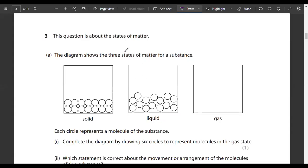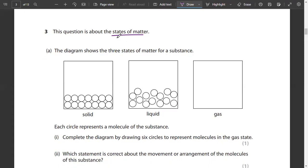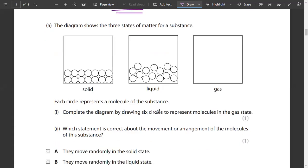Moving on to question number three. This question is about states of matter. The diagram shows the three states of matter for a substance: solid, liquid, and gas. Each circle represents a molecule of the substance.